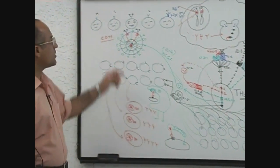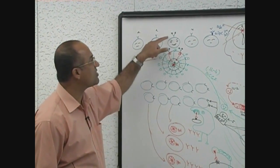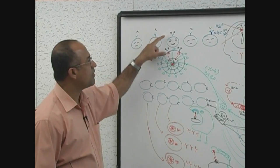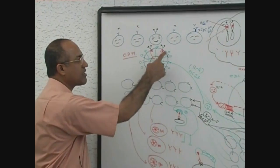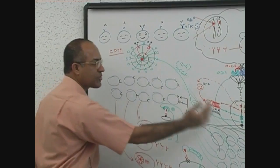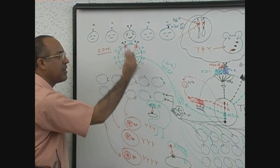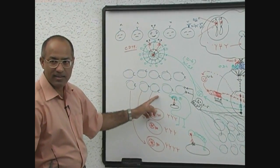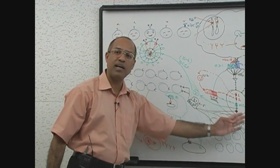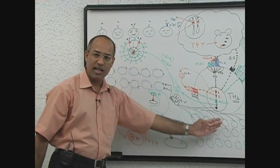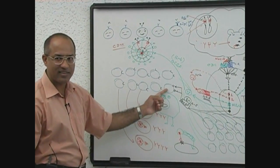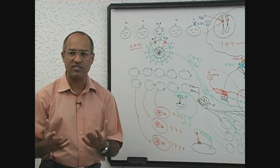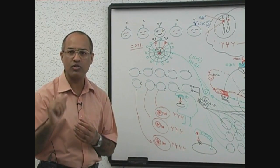Meanwhile, free antigen will find one B cell whose BCR can recognize and react with the free antigen. That particular B cell will be selected by the free antigen and will express receptors for interleukin-4. Under the influence of interleukin-4 from the T helper cell, that B cell undergoes clonal expansion. Clonally expanded B cells express receptors for interleukin-5, and under its influence they convert into plasma cells. Plasma cells are very active and every plasma cell releases thousands of antibody molecules every second.